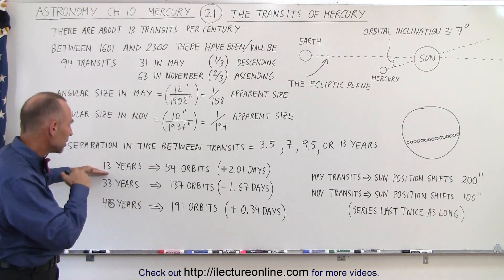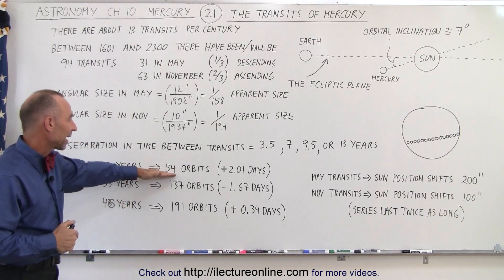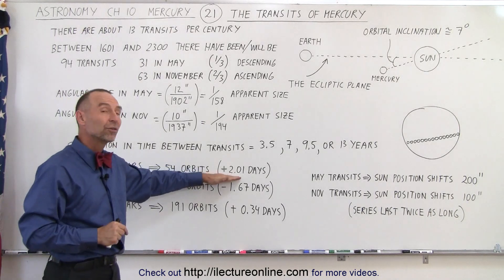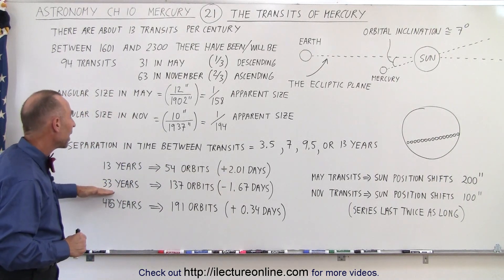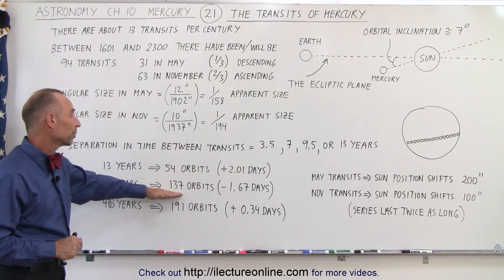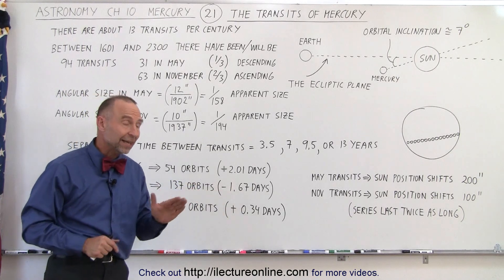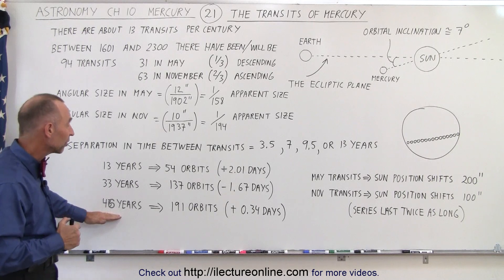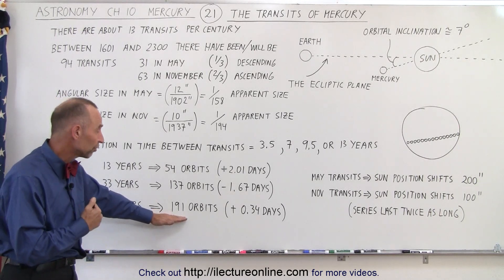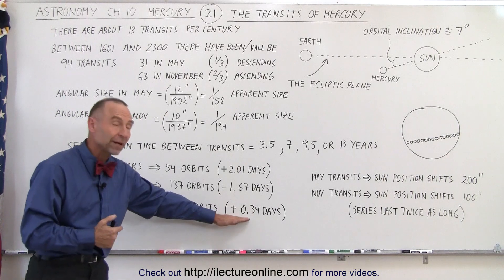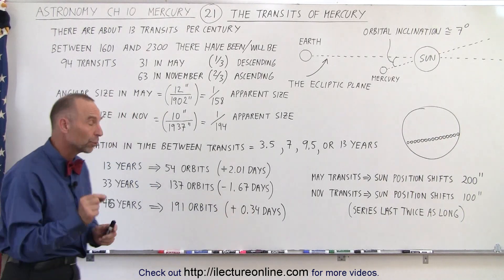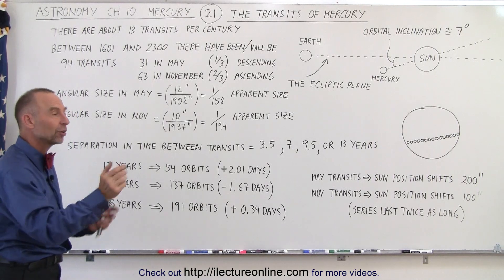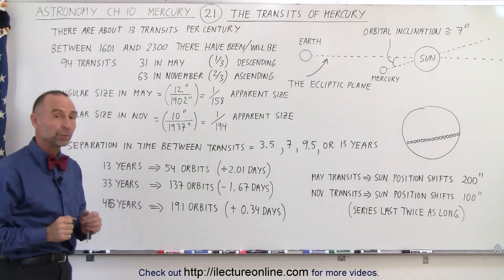If 13 years go by, that's almost exactly equal to 54 orbits of Mercury minus about two days. If 33 years go by, it's 137 orbits minus 1.67 days. What's really special is that when 46 years go by between transits, that means there are 191 orbits of Mercury around the sun plus 0.34 days — in other words, every 46 years Mercury goes around the sun almost exactly 191 times.